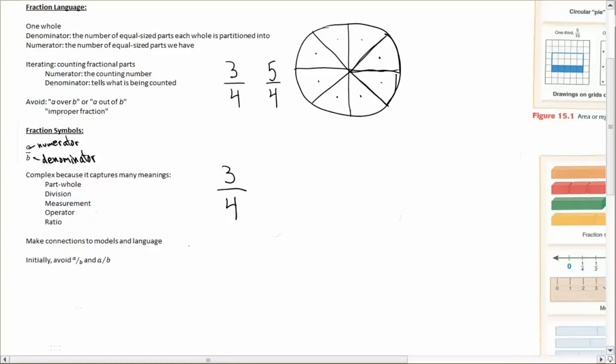As you work with kids, you need to help them make connections to the models and the language. So write down the symbols a lot as you talk about them and avoid changing and using things like 3 fourths. Instead, stick with one.